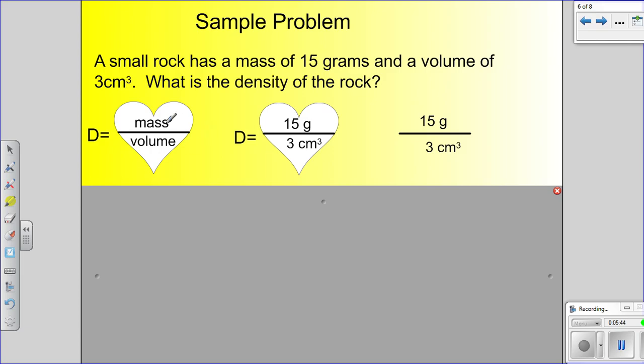Once you get the formula written down, you then want to substitute the words for the actual numbers. So for example, mass is on the top. Well, we need to go up to the problem and find the mass. Mass is right here. It's 15 grams. So we substitute 15 grams in for mass. And then we need to put volume on the bottom. That's volume of 3 cubic centimeters. Then we'll put it right down here. Now it just becomes a fraction. 15 grams over 3 cubic centimeters. This is a division problem right here.